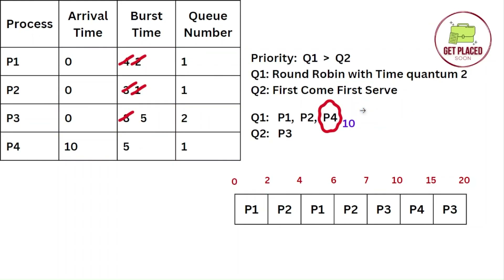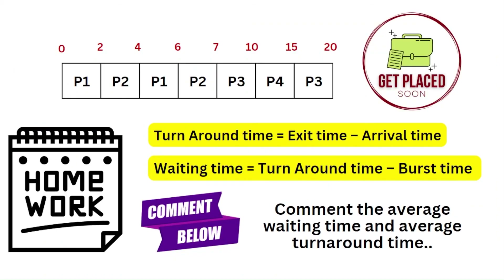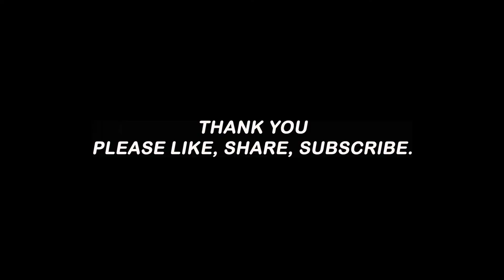I hope you understood how we drew the Gantt chart. If you have any doubts, comment below. Now for homework: using the Gantt chart and the formulas provided, calculate the average turnaround time and average waiting time and comment below. P1 completes at 6 and P3 completes at 20. If you liked this video, make sure to like, share, and subscribe to our channel Get Play Soon. Thank you so much for watching. Bye bye.